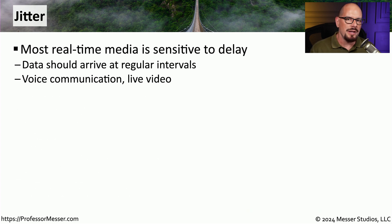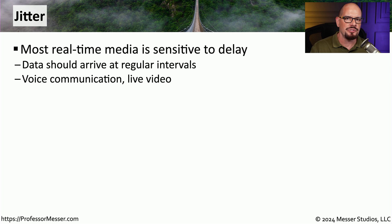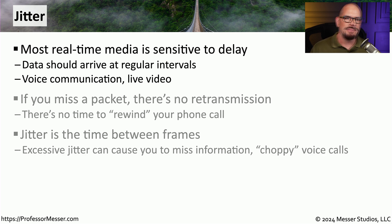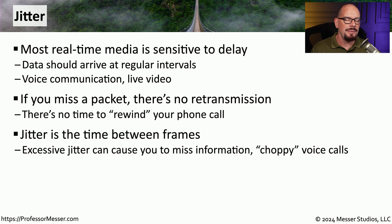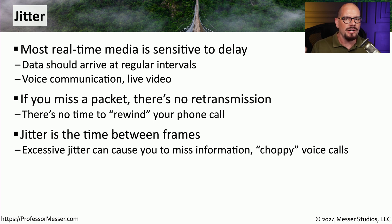Talking on a voice over IP phone call or watching live video streams are very sensitive to any type of delay you might put on the network. We would like these packets to arrive at regular, predictable intervals, and as long as that's happening, we can continue to have our phone call or watch our live stream. But if we have congestion on the network or the packet is corrupted, we have to discard that packet — we can't rewind our conversation or rewind the live stream. We simply have to discard that packet and continue forward. This might cause a delay or a clicking noise on the phone call, or we might see a small stutter on our live stream.